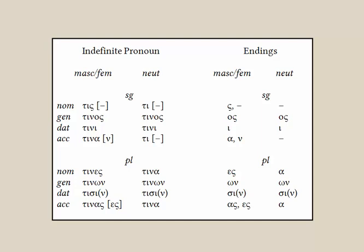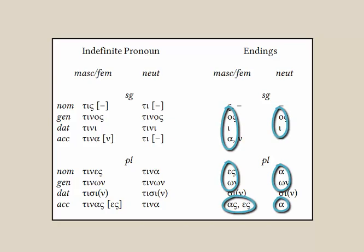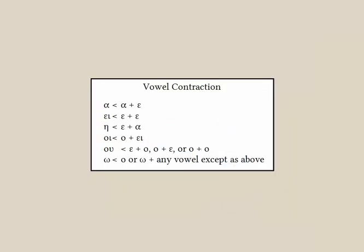In the first four patterns, we saw modifications to these basic endings because consonants were being added to consonants. Now we'll have stem endings in vowels, so we'll see modifications due to vowel contraction when endings with vowels are added to these stems. And you see that there are several of these endings that begin with vowels, so you need to become familiar with the common forms of contraction.